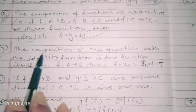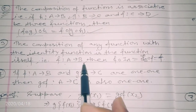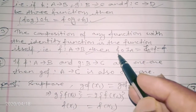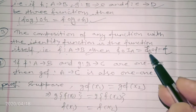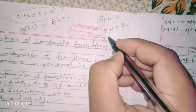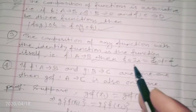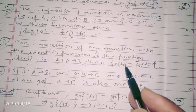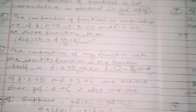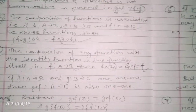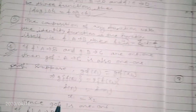Similarly, for composition of functions: if f is defined from A to B, and I_A is the identity function on set A, then composing with the identity function gives back the same function. That is, f∘I_A equals I_B∘f equals f. So composing with the identity function yields the same function.